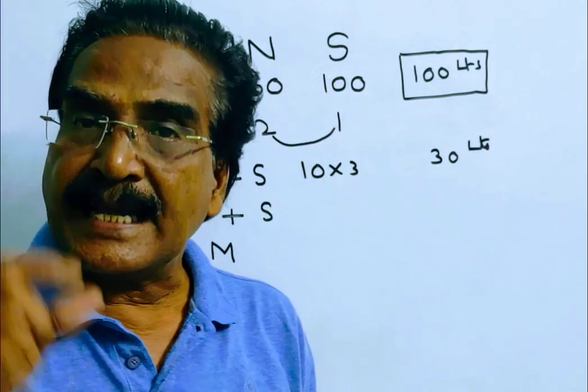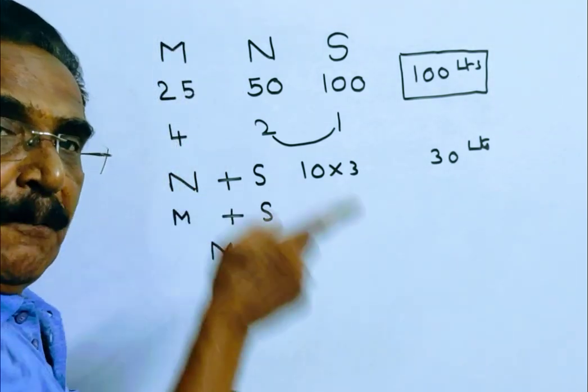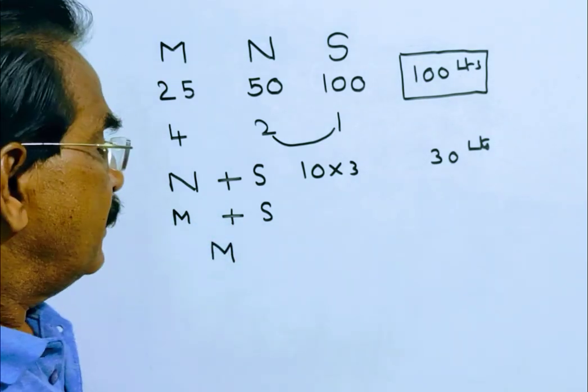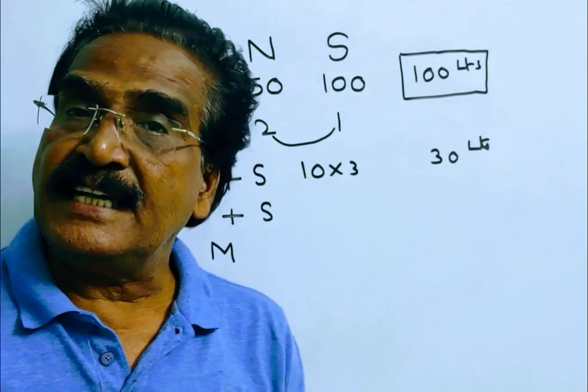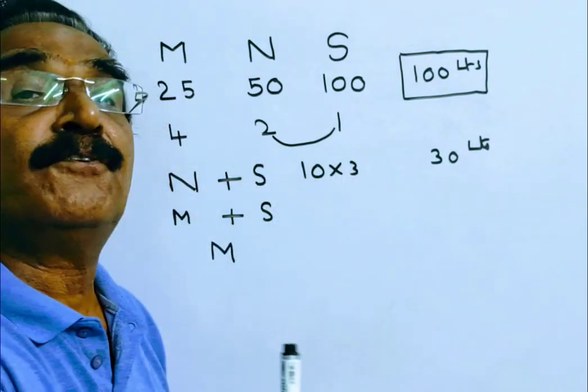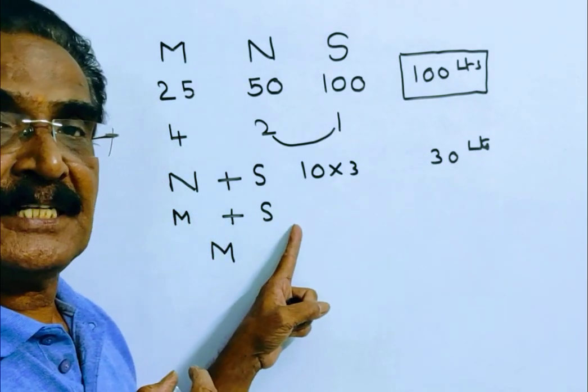After that, pipe N is shut and pipe M is opened. Now M and S are working. Now it is given that 15 minutes before the tank overflows, that is 15 minutes before the tank is filled, pipe S is closed.